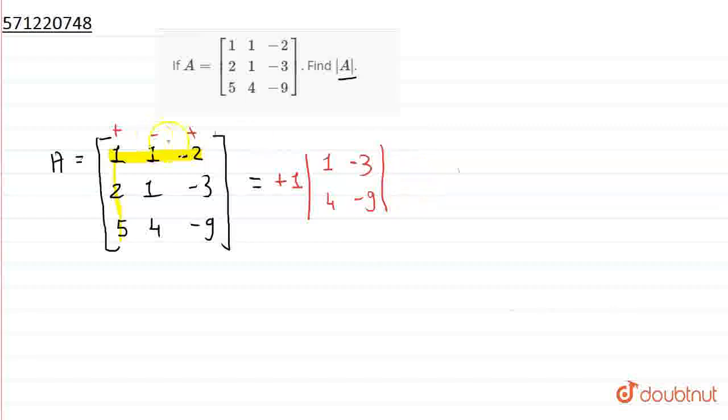Again, the second one is minus 1. So, we just block this line and this line. So, remaining part is 2, minus 3 and 5, minus 9.